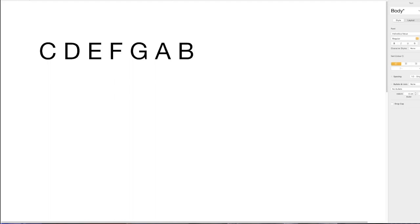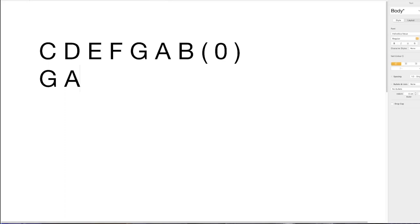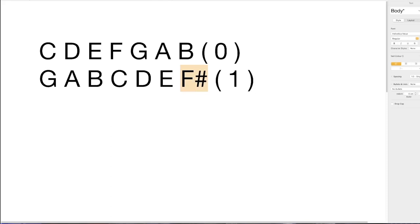Starting at C major with zero sharps on the circle of fifths. To get the next scale, we go to the fifth note of C, which is G. G major has all the same notes as C, but the last note — the seventh — becomes a sharp: G, A, B, C, D, E, F sharp. That gives us one sharp. The previous C scale apart from that final note becoming sharp.